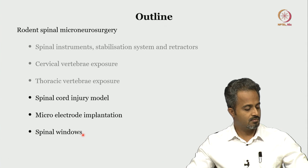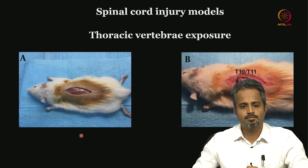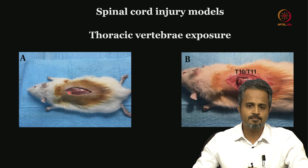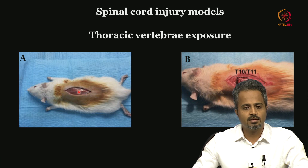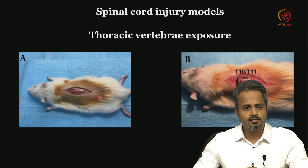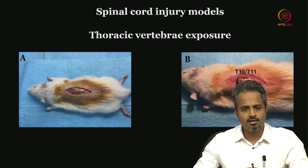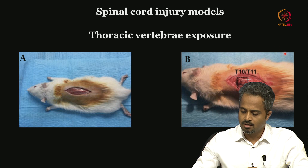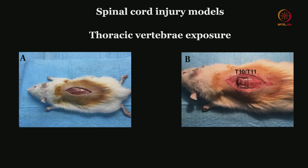Let us look at the thoracic vertebrae exposure. On the left-hand side, before you bring in the stabilization system, you can make the skin incision and try to expose the spinal column that comes right in the middle. This picture also shows the layers that would come — obviously draping, painting, and cleaning has been done, though this picture does not include the draping, but draping is always a good practice to include. On the right-hand side you can see a T10-11 exposure that has been done.